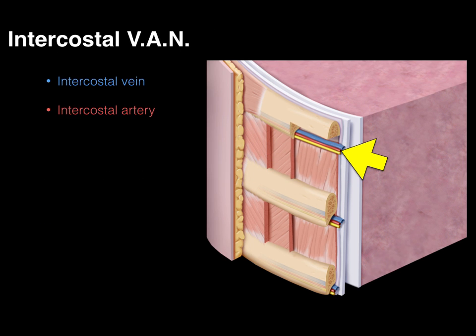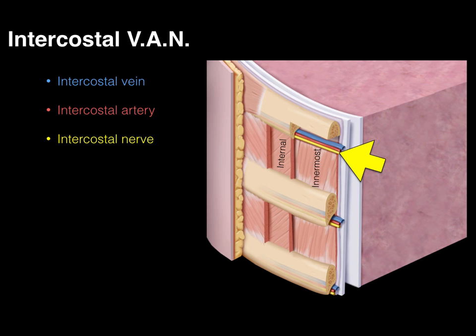Then there is our intercostal vein, intercostal artery — both of which we'll talk about in more detail next week when we do the mediastinum — and then there's our intercostal nerve. The intercostal nerve is really the extension of the ventral ramus, providing cutaneous sensation to that dermatome at that segmental level as well as motor innervation to those intercostal muscles. So the key is: the vein, artery, and nerve course between the internal and innermost intercostal. A pattern we'll always see is that between the intermediate and internal layer of the body wall muscle group, you'll always find the neurovascular bundle.